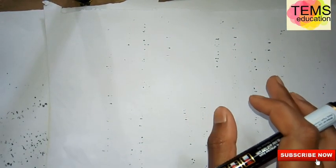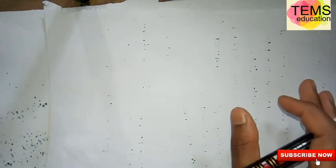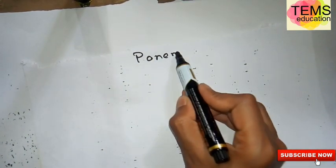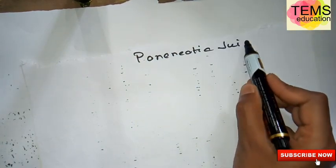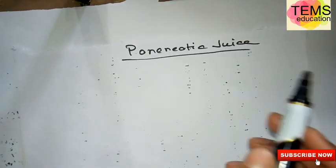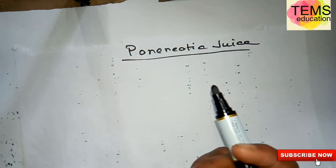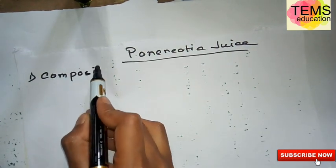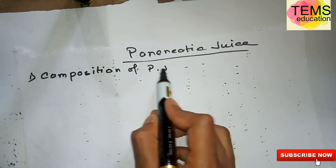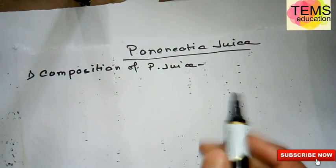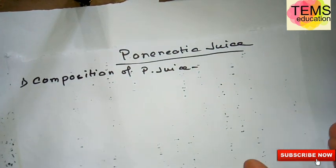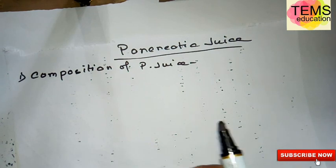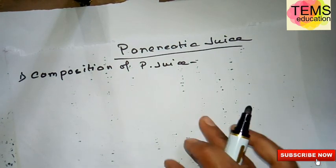Let's talk about the pancreatic juice. Pancreatic juice is a liquid which is secreted by the pancreas gland. The pancreas gland is situated in the abdominal cavity behind the stomach.